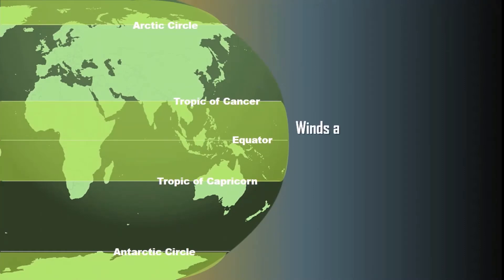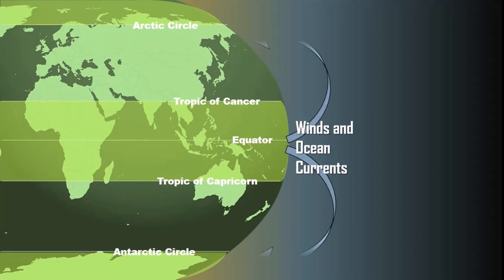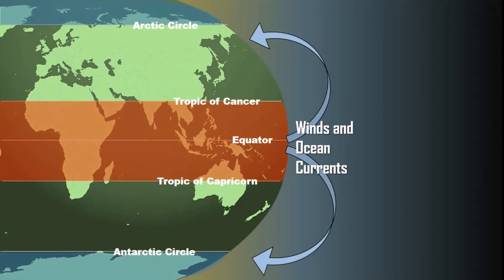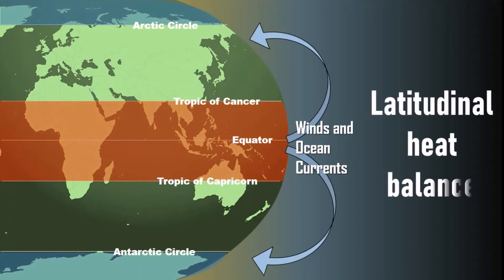Winds and ocean currents transfer heat from surplus heat regions to deficit heat regions. This is how latitudinal heat balance is maintained.